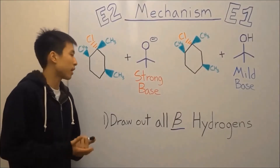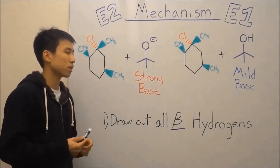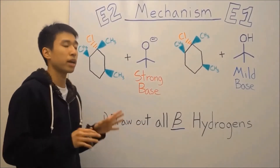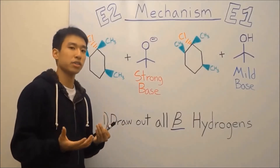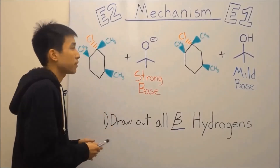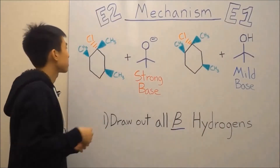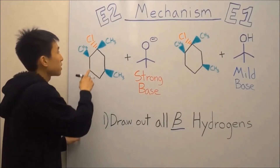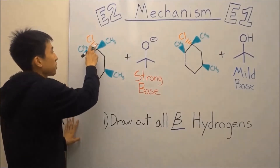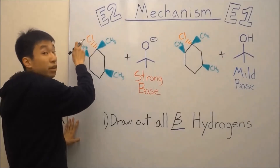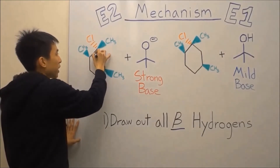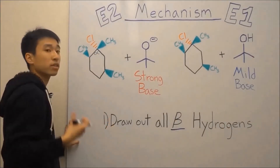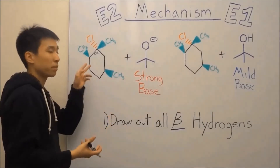The first thing you want to do for elimination reactions is draw out all your beta hydrogens. Beta hydrogens are basically the hydrogens that are attached to your beta carbons. So let's find our beta carbons in our substrate first. This carbon here is not going to be a beta carbon because it's the first carbon attached to your functional group or your leaving group, the halide chlorine — so this is what we call the alpha carbon.